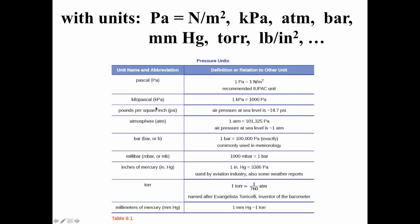You should be able to relate pressure in one set of units to pressure in another set of units, especially if you have access to conversion factors. A torr is 1/760th of an atmosphere, and an atmosphere is 101,325 pascals.